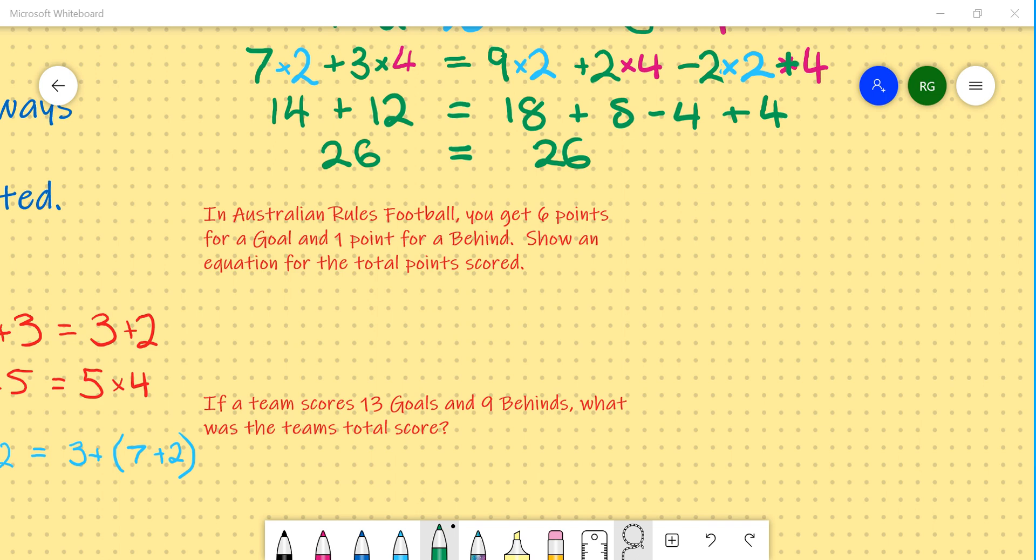So we can say goals represent g. So you get 6 points for every goal. So it's 6 multiplied by g plus 1 multiplied by, let's say, we'll call that b for behinds. That will equal the total. And that is a way of showing an equation for the number of goals and behinds scored in order to get you a total score for your team.